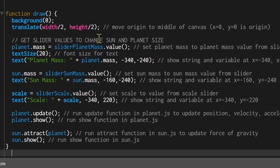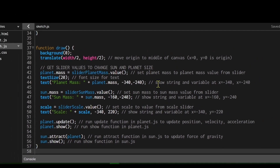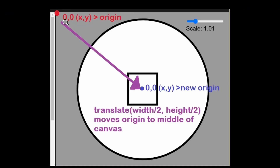In the draw function I'm setting the background to black and translating to width/2 and height/2. This moves the origin from the top left corner of the canvas to the middle. In p5 the origin — where x=0 and y=0 — is the top left corner, but using translate you slide it over. By translating to width/2 and height/2, the exact middle of the canvas becomes the new origin.